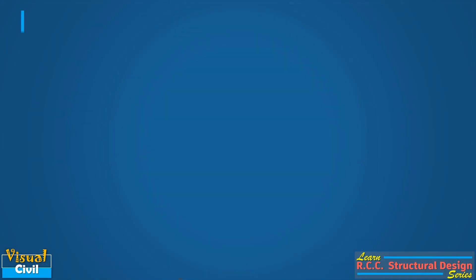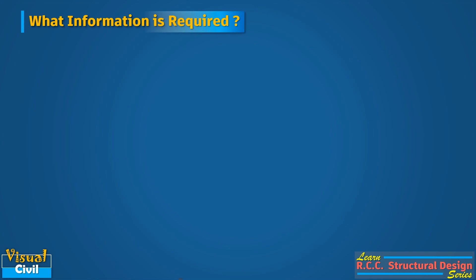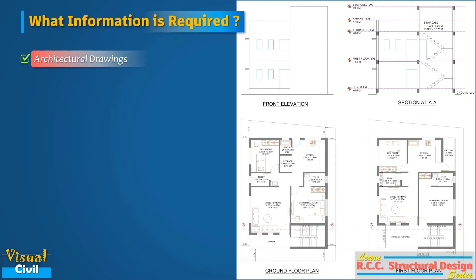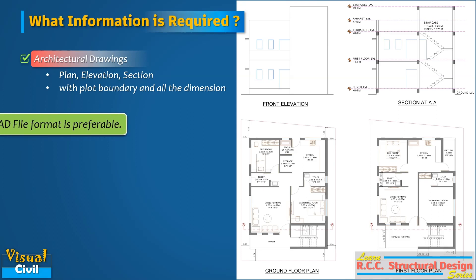Let us start with the information required before starting the structural design. First of all, we require architectural drawings of the building, which include plan, elevation, and section with plot boundary and all dimensions. The soft copy of these drawings is always preferable.